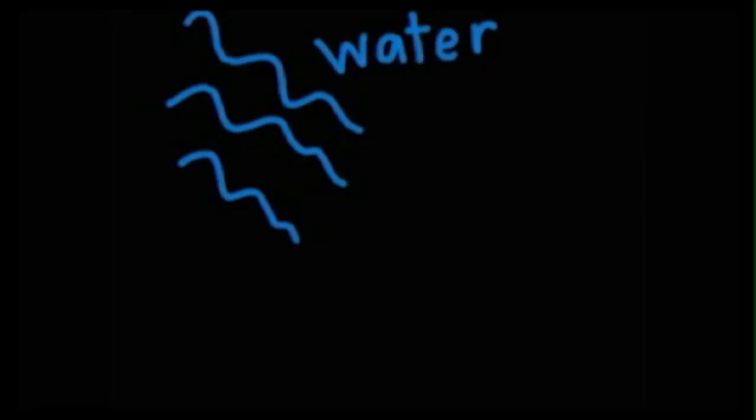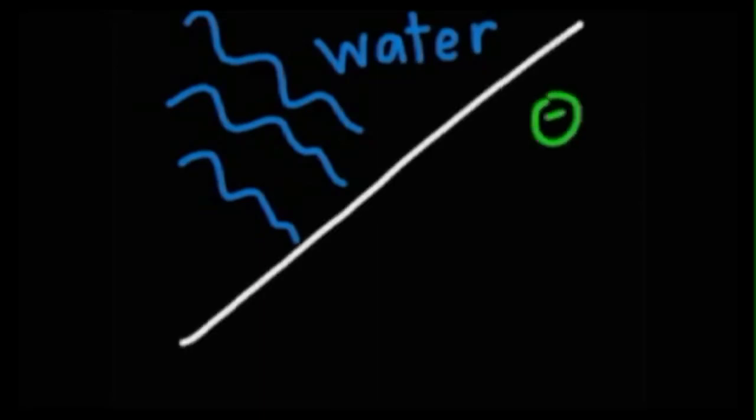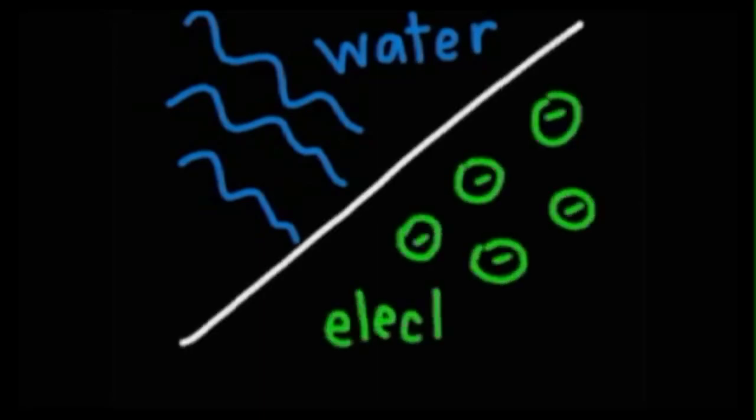We use a water analogy because we can see water and it's very hard to see electrons and how electrons flow through a circuit. Now let's go in the lab and explore how we made this analogy come to life.